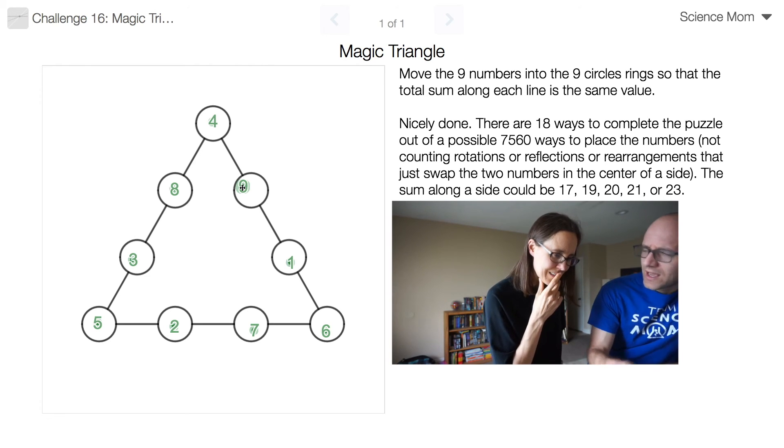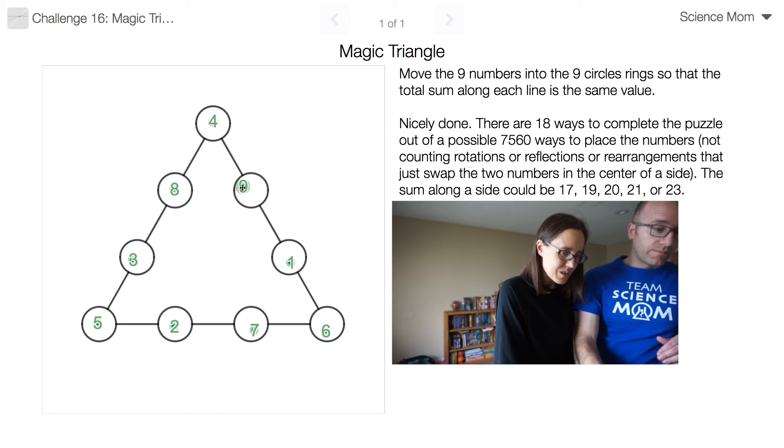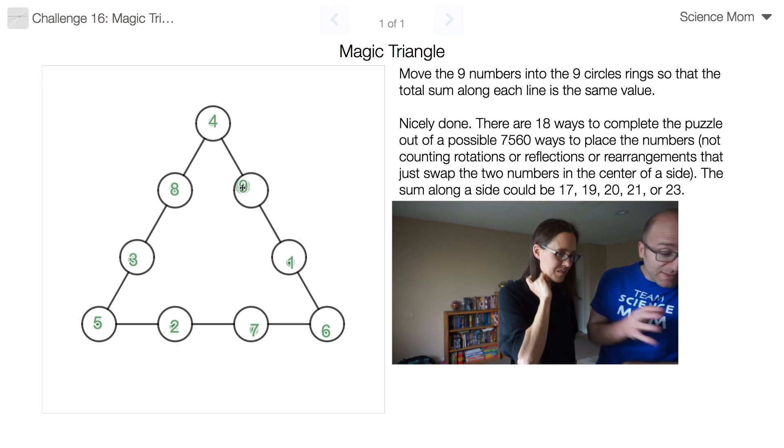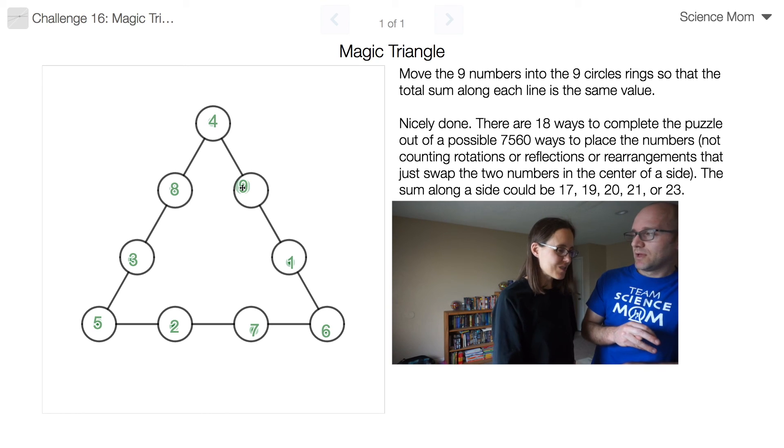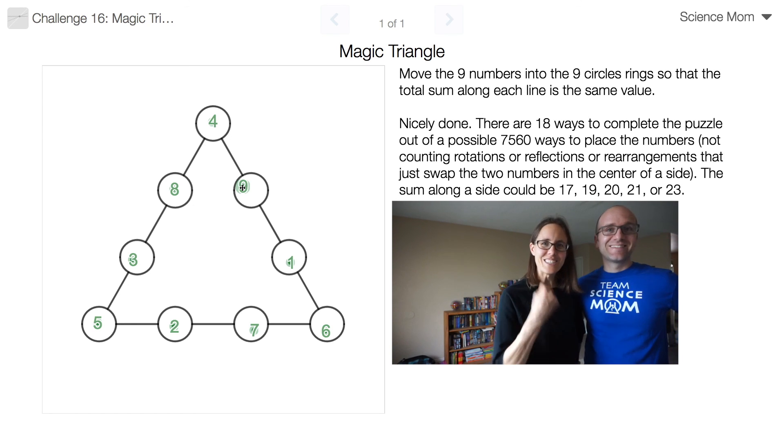Really? I believe 20 has the most possibilities. That's pretty cool. I would not have guessed that there were 18 different ways to arrange the numbers. No, but out of 7,560 ways of placing them, it's relatively small, I suppose. Yeah. So, well done. That was a nicely earned victory. Yes.